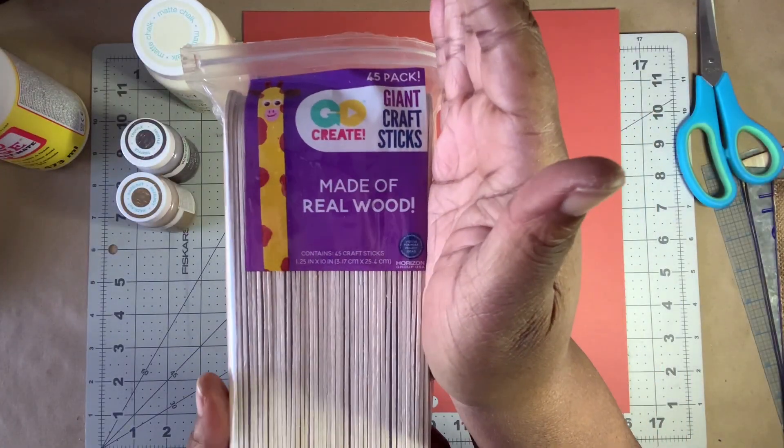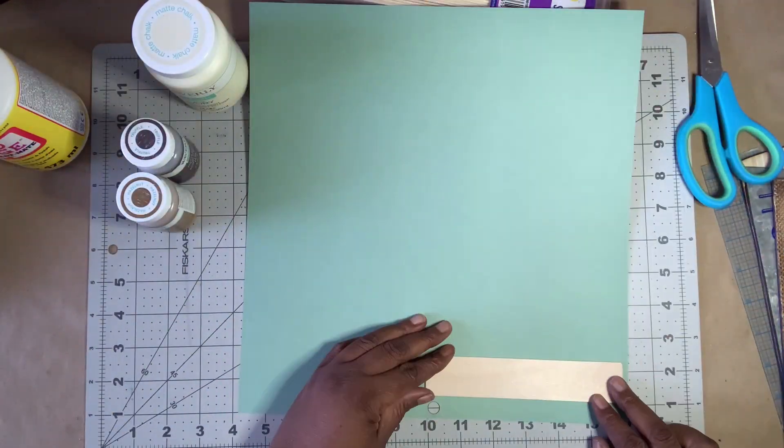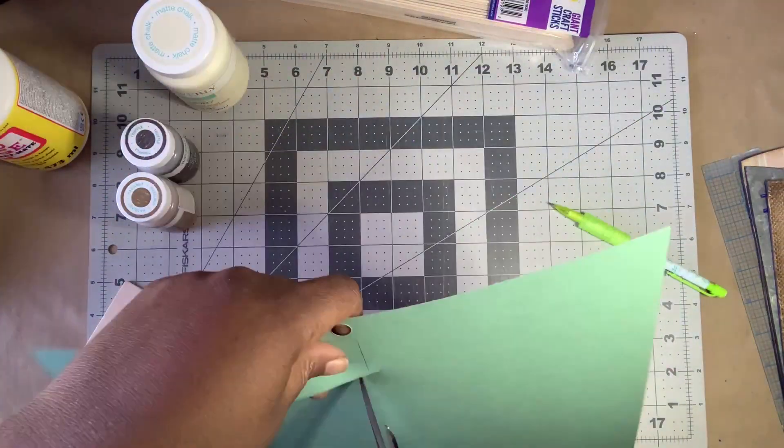Next, I cut one of these giant craft sticks from Walmart down to six inches. Then I applied an orange piece of scrapbook paper to it using Mod Podge and set it aside to dry.